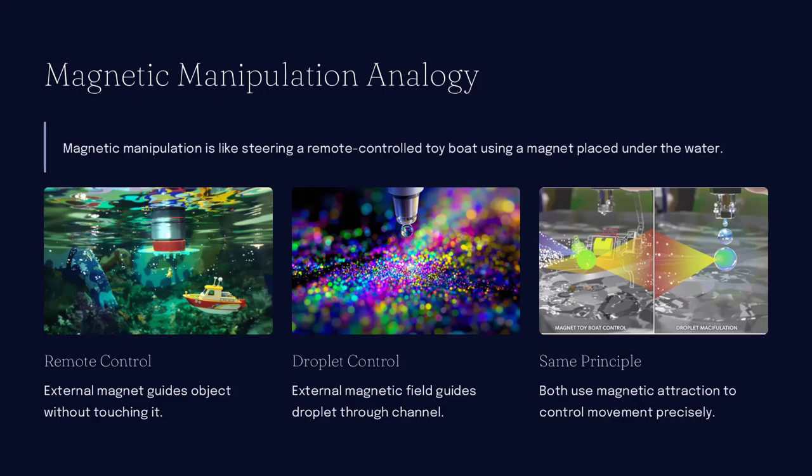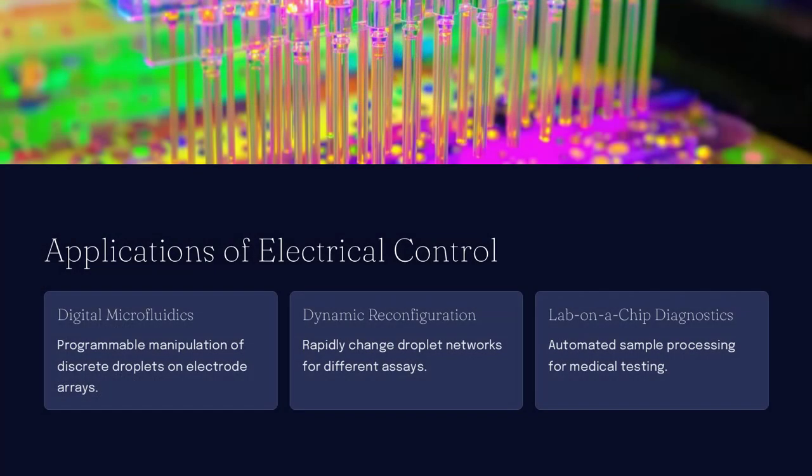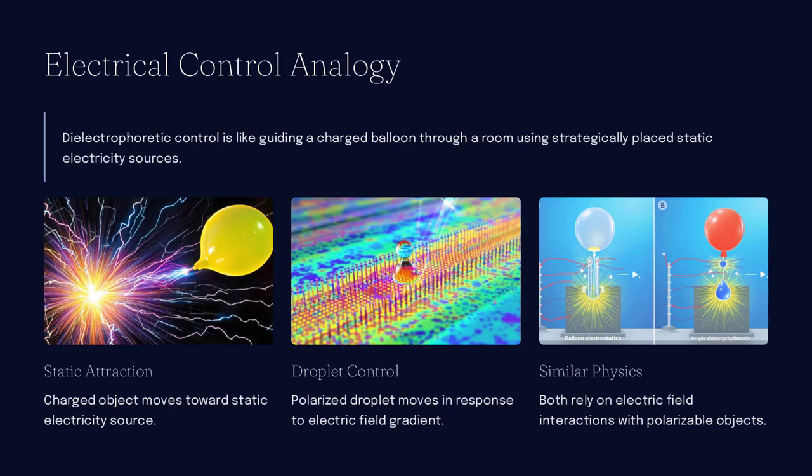Splitting droplets is just as important. By forcing a droplet through a Y-shaped junction or using electric fields, it can be divided into two or more smaller droplets. This is particularly helpful when a sample needs to be distributed into multiple parallel tests or compartments, such as in high-throughput drug screening.